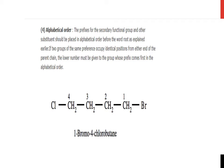Fourth point: alphabetical order. The prefixes for the secondary functional group and other substituents should be placed in alphabetical order before the word root. If two groups of the same preference occupy identical positions from either end of the parent chain, the lower number must be given to the group whose prefix comes first in alphabetical order. For example: CH2-CH2-CH2-CH2, one side with Cl, other side with Br. Then it is 1-bromo-4-chlorobutane.